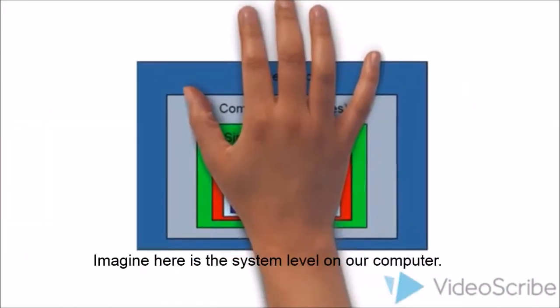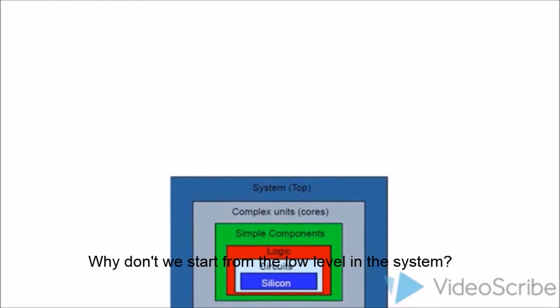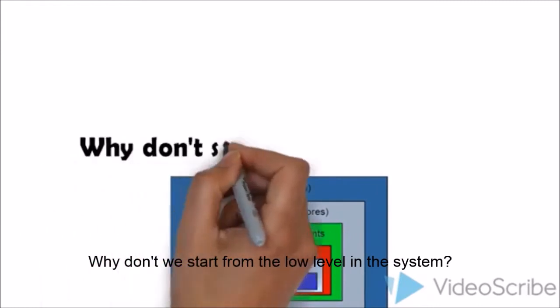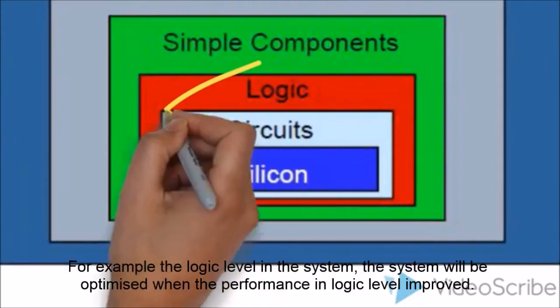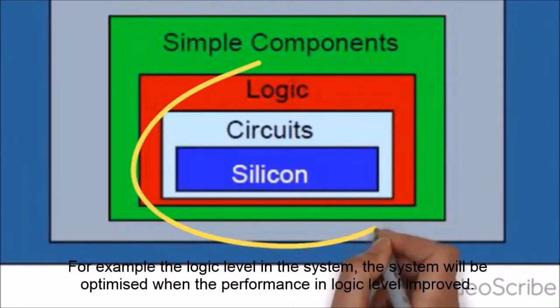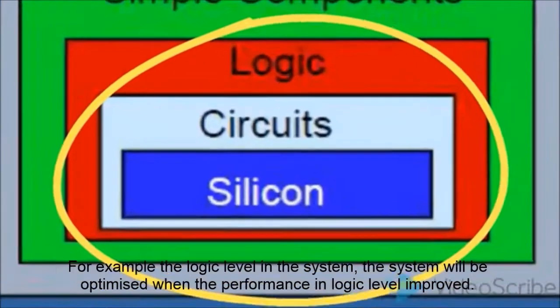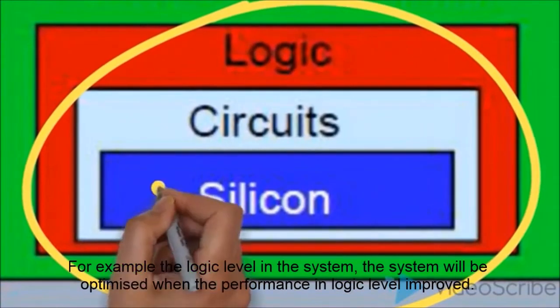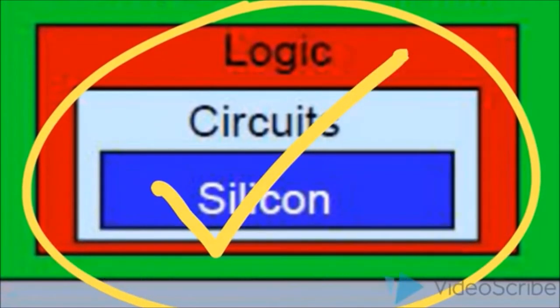Imagine here is the system level on our computer. Why don't we start from the low level in the system? For example, the logic level in the system. The system will be optimized when the performance at the logic level is improved.